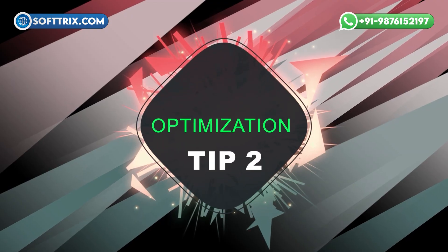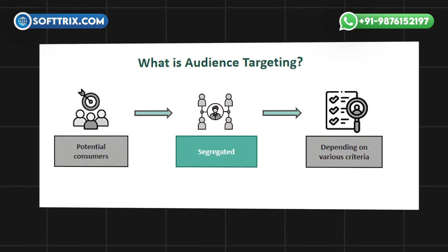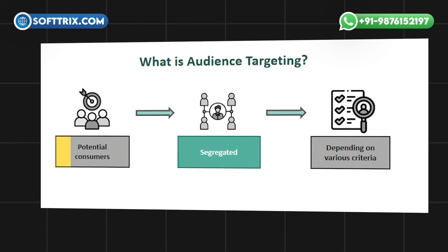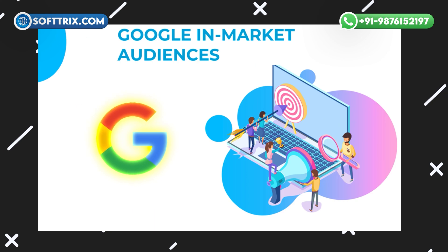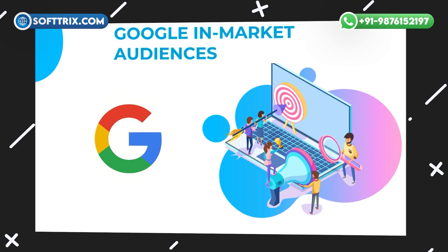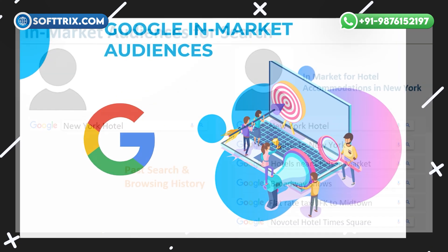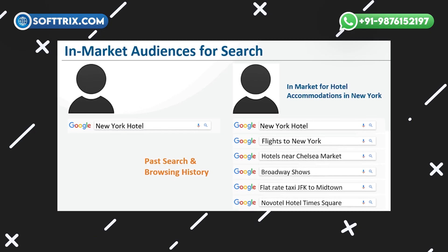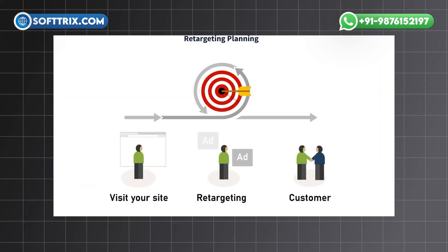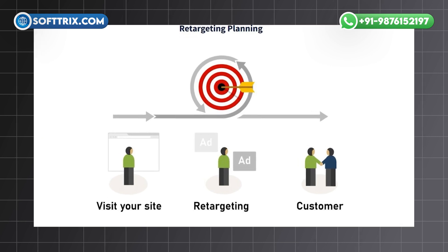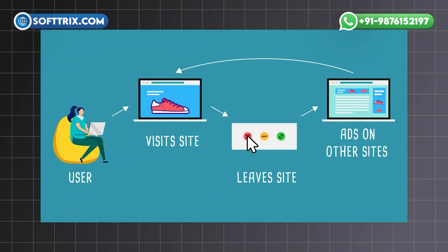Optimization Tip No. 2: Implement audience targeting to reach potential customers based on their interests and demographics. Use Google's in-market audiences to target users actively considering similar products or services. Optimization Tip No. 3: Use remarketing to re-engage visitors who have previously interacted with your website, tailoring ads to remind them of products they viewed or offers they considered.